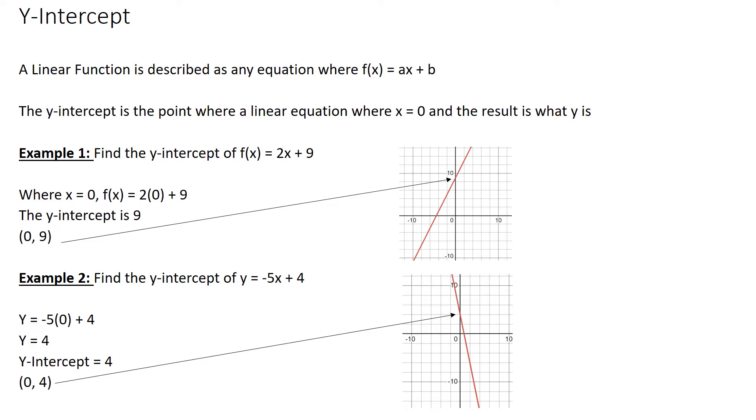So I get the equation, f of x equals 2x plus 9, and put in 0 for x, 2 times 0 is 0, so I just leave it with 9. So the y-intercept is 9. And you can see if I graph it, 2x plus 9, that's the equation, that's where it ends up being.